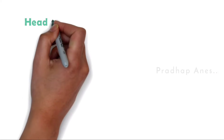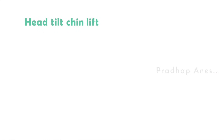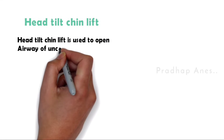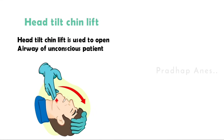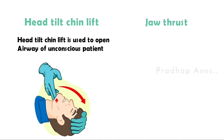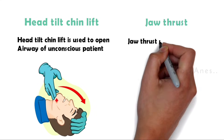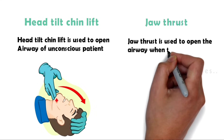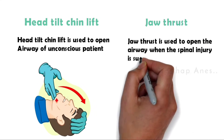Difference between head tilt chin lift and jaw thrust maneuver: A head tilt chin lift is used to open the airway of an unconscious patient. Jaw thrust is used to open the airway when a spinal injury is suspected.